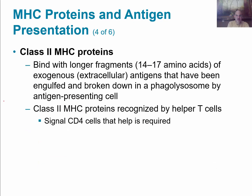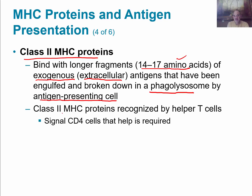Then we have the class 2 MHC proteins. These are going to bind with longer fragments — in this case 14 to 17 amino acids — of exogenous antigens, meaning they originate outside the cell. These are extracellular antigens that have been engulfed and broken down by a phagolysosome and then by the antigen-presenting cells. The class 2 MHC proteins are going to be recognized by T-helper cells, and they signal CD4 cells that help is required.